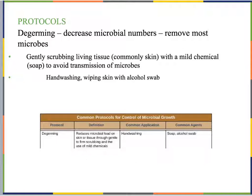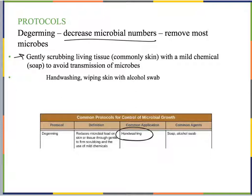The next level down is de-germing, which just decreases microbial numbers — removing most of them. De-germing is really what we're talking about when we wash our hands. It involves gently scrubbing living tissue, commonly skin, with a mild chemical like soap or alcohol. When we wash our hands, we are de-germing them — using soap to facilitate getting rid of most of the microbes on our skin.